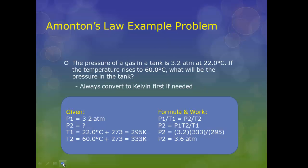This is an example problem. Pressure of a gas in a tank is 3.2 atmospheres at 22.0 degrees Celsius. If the temperature rises inside the tank to 60.0 degrees Celsius, what would be the pressure in the tank? Always convert to Kelvin first. We have to do that, because we're using temperatures.